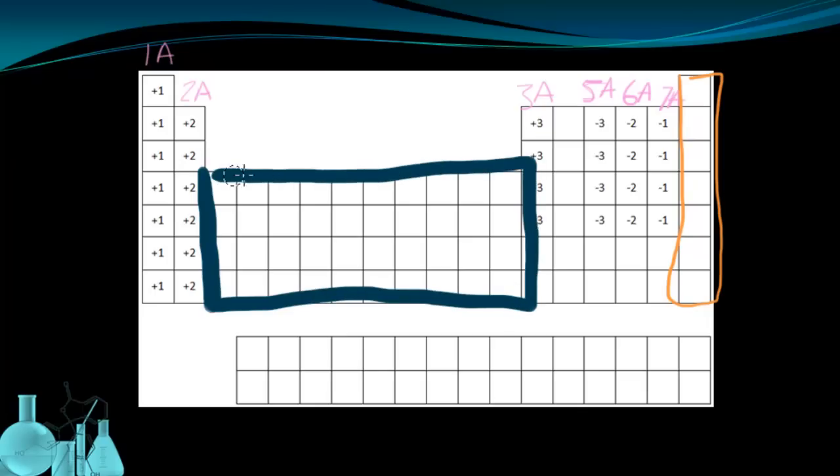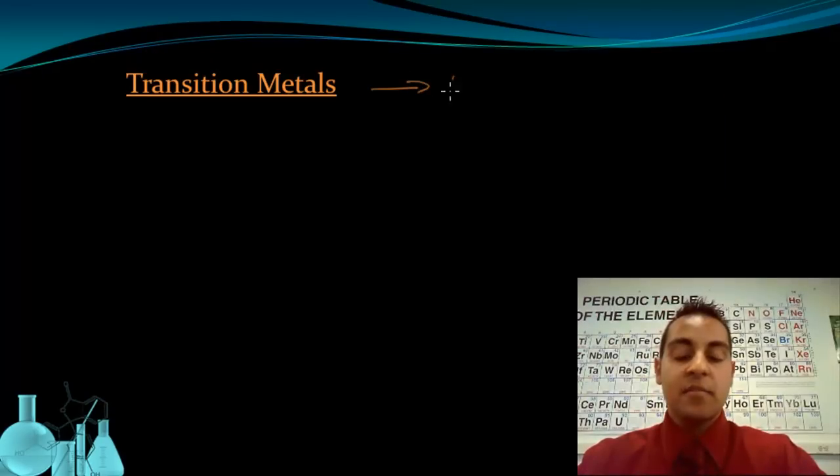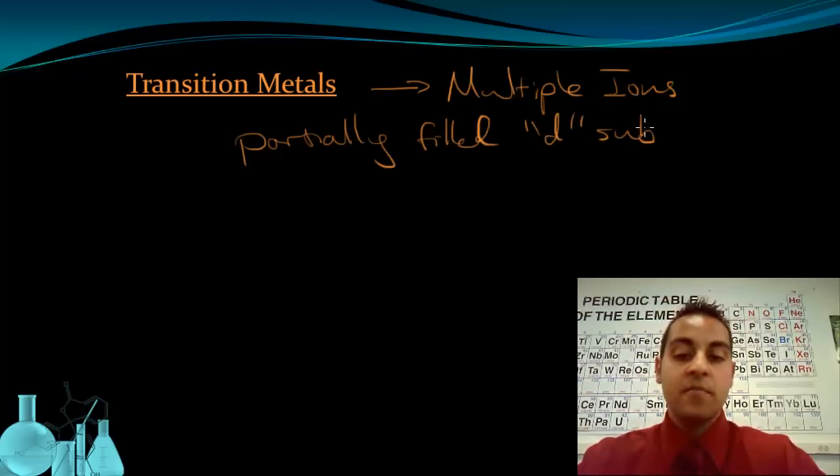The transition metals in this inner block here have a slightly different naming scheme because they don't always just form one kind of ion. Transition metals can sometimes have multiple possible ions. The reason for this is because they're partially filled D sublevel. Now not all transition metals have multiple ions, but many of them do. So it's going to be a matter of getting used to which ones have them and which ones don't, and you'll get used to that with practice. But let's see how to deal with them when they do come up.